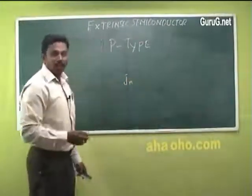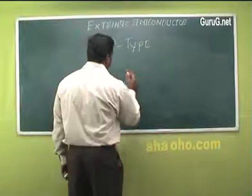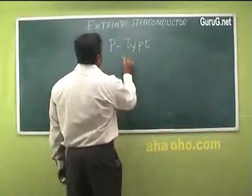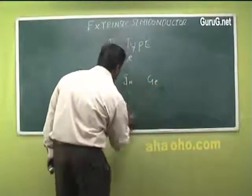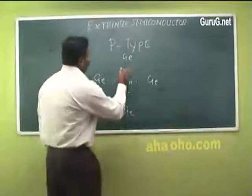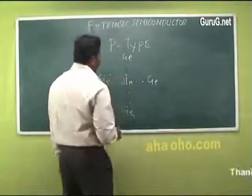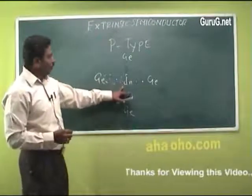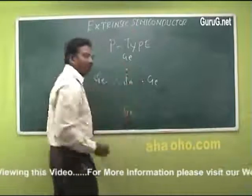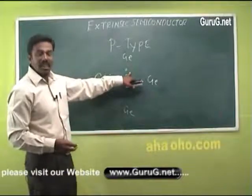In case of indium, the valency electron is 3. All 3 indium electrons are shared with the germanium atoms — which have 4 valency electrons each — and one hole is created in the germanium atom. Since there is an excess of holes, holes are the majority carriers in p-type semiconductors.